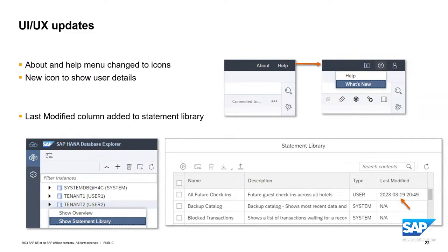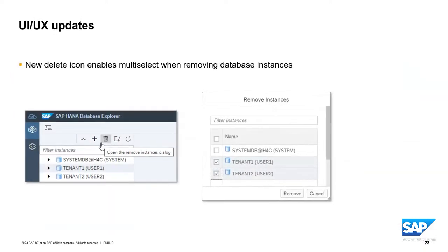There is also a new feature in the statement library, a location where you can store frequently accessed SQL statements. Those statements are broken into two types: user statements, which you can actively create, modify, or delete, and system statements, which are part of the Database Explorer. There is now a new last modified column for your user statements. Also, there is a new icon in the catalog browser that allows you to multi-select multiple database instances within the Database Explorer and then remove them — very helpful for periodically removing connections you're no longer using.